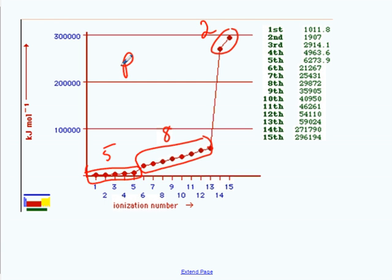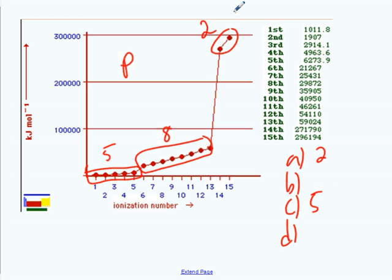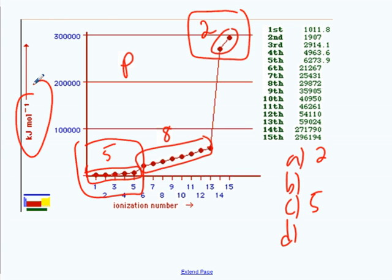How many valence electrons does phosphorus have? In a multiple choice question, I would put two answer choices: are the valence electrons the ones at the top (high ionization energies), or the ones at the bottom (low ionization energies)? They're the ones furthest from the nucleus, so they should be the easiest to take away — lowest ionization energies. So this element has five valence electrons. It's phosphorus, in group 15 on the periodic table, in the same family as nitrogen.